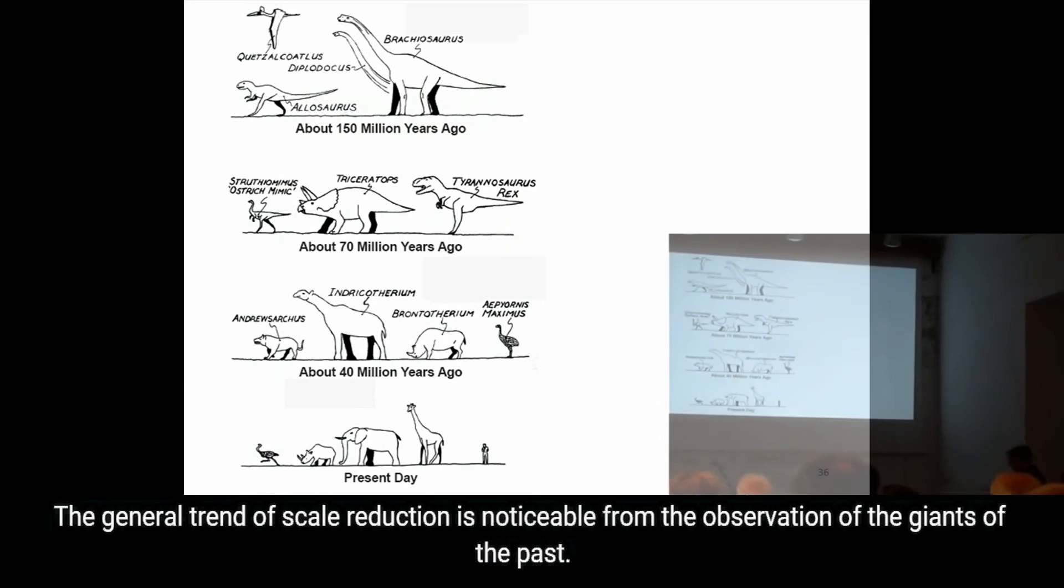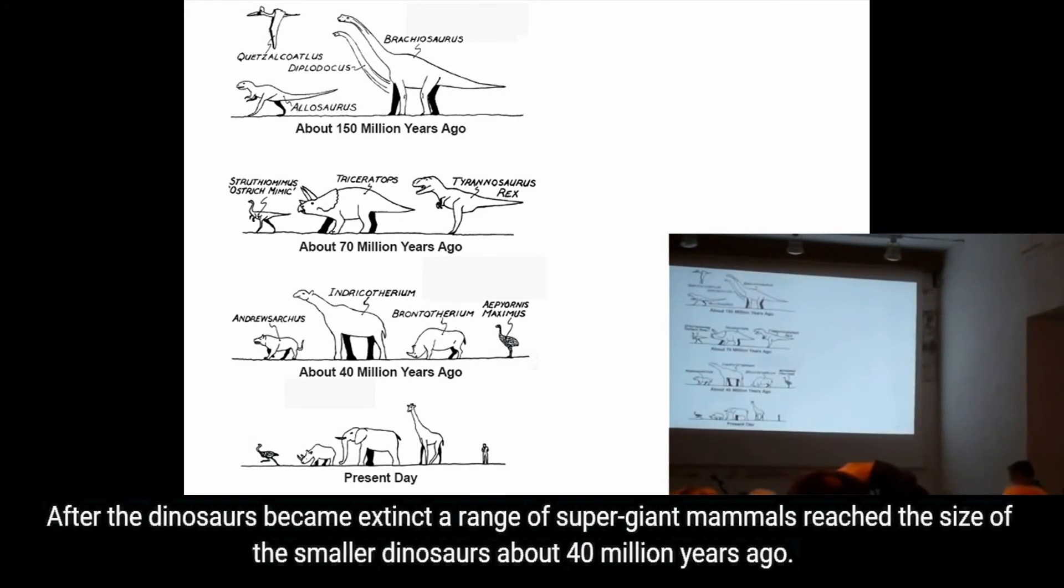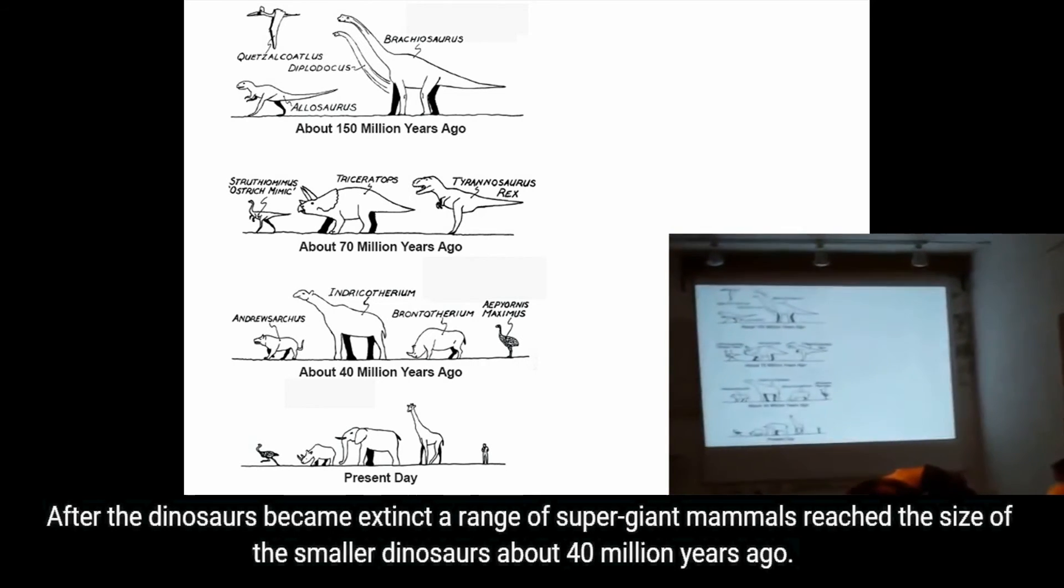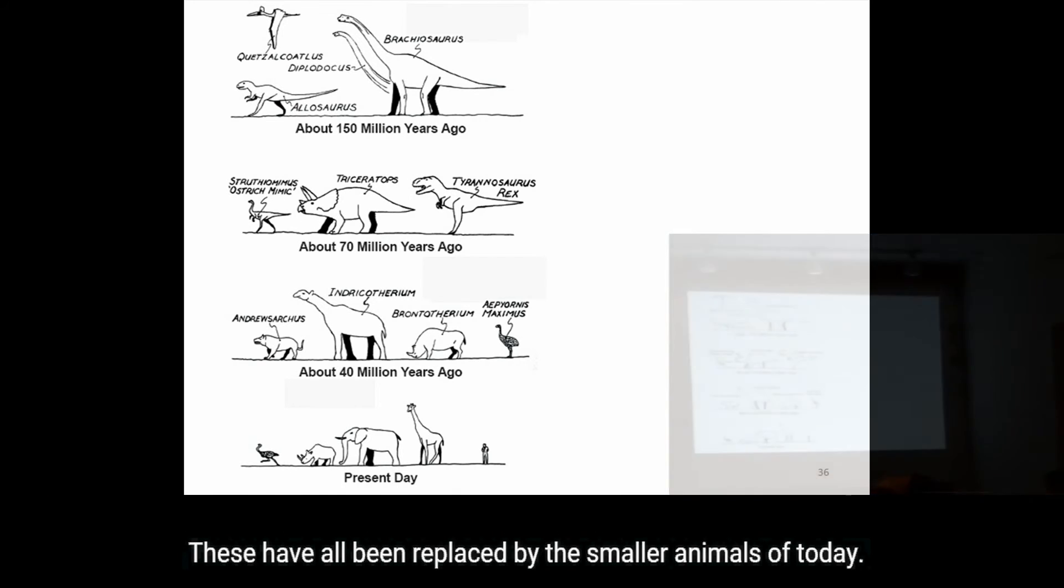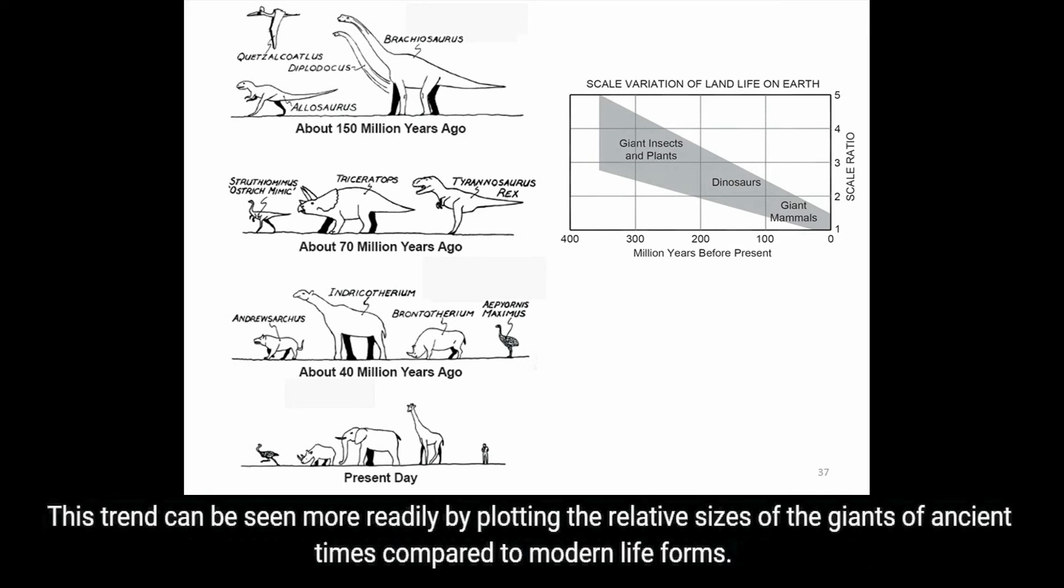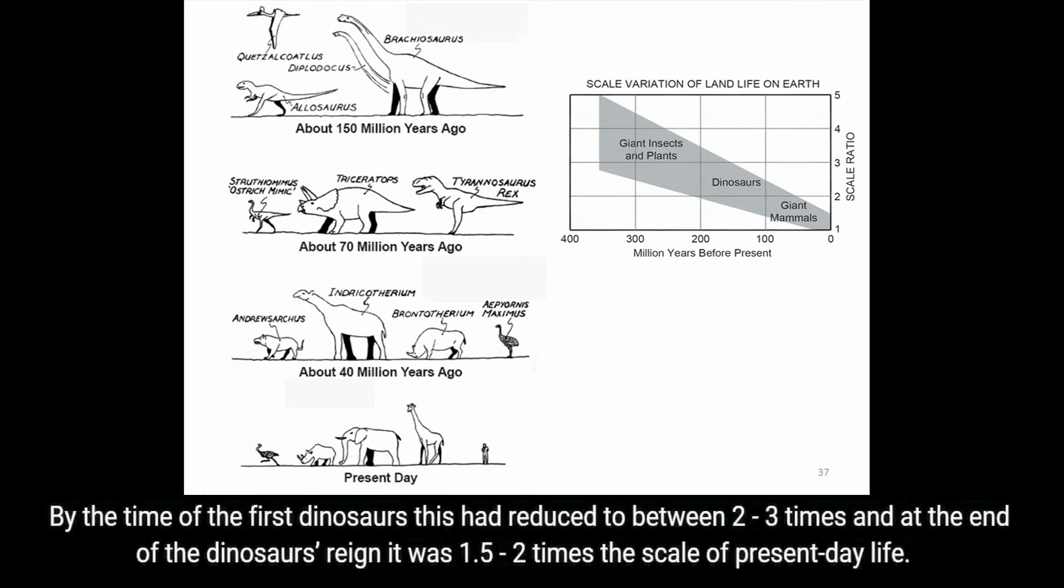The general trend of scale reduction is noticeable from the observation of giants of the past. After the dinosaurs became extinct, a range of supergiant mammals reached the size of smaller dinosaurs about 40 million years ago. These have all been replaced by the smaller animals of today. This trend can be seen more readily by plotting the relative sizes of giants of ancient times compared to modern life forms. 350 million years ago, the scale of life was between 3 to 5 times greater than similar forms of life reached today. By the time of the first dinosaurs, this had reduced between 3 to 2 times and at the end of the dinosaurs' reign, it was 1.5 to 2 times the scale of present-day life.